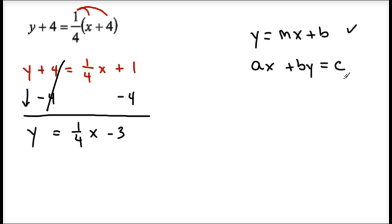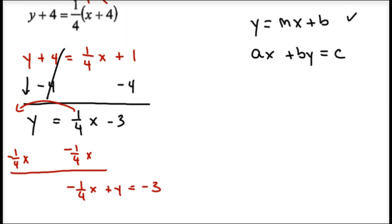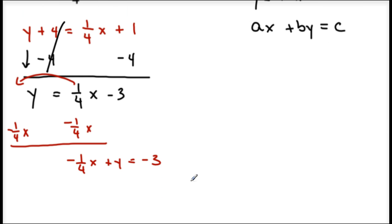Now from here, let's get this into standard form. Are both my terms with x and y on the same side? No. y is on the left, 1 fourth x is on the right. Let's subtract 1 fourth x — subtract 1 fourth x from both sides. This gives me negative 1 fourth x plus y equals negative 3.